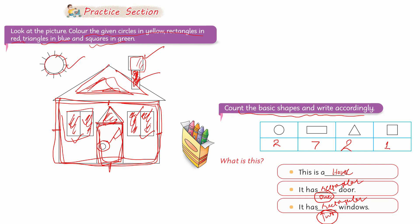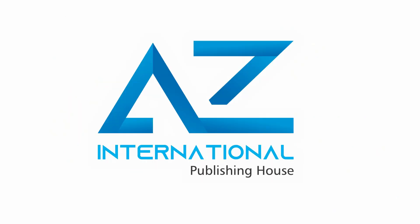We have read the geometrical shapes and seen the characteristics of them. In geometrical shapes, there are two key characteristics: one is sides and the other is corners. We will see you in the next video. Allah Hafiz.